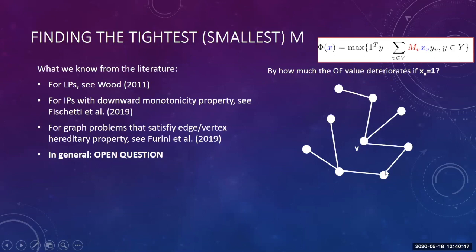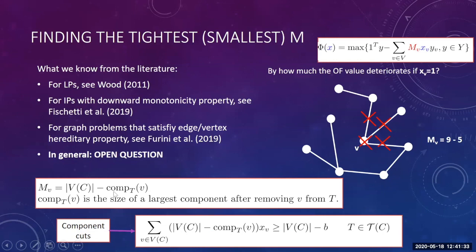For a tree with nine vertices, if we do not interdict any vertex, the maximum solution value is nine. If we interdict vertex v, the graph splits into three components and the largest has size five. The coefficient M must correct the original objective value — it equals the maximum component size minus the largest component remaining after interdiction. We proved these coefficients are lower bounds for M and that they result in a feasible reformulation. These are the component cuts, and separation is based on breadth-first search, so they can be separated in polynomial time.